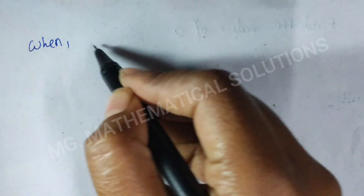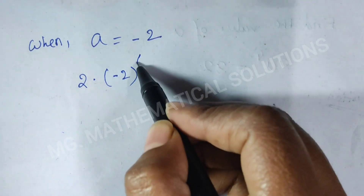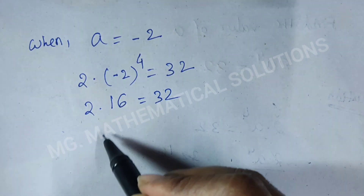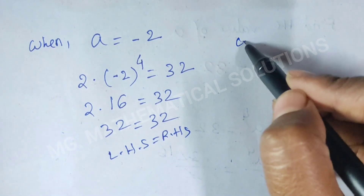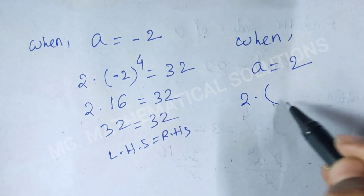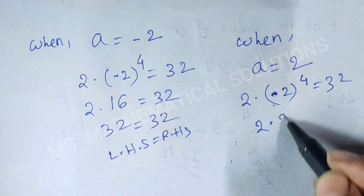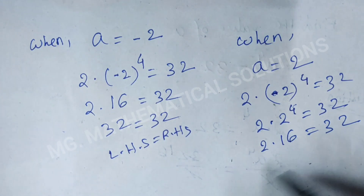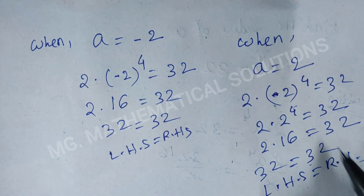When a equals minus 2, the equation becomes 2 times (minus 2) to the power 4 equals 32, so 2 times 16 equals 32, and 32 equals 32. Left hand side equals right hand side. When a equals plus 2, we get 2 times 2 to the power 4 equals 32, so 2 times 16 equals 32, and 32 equals 32. Left hand side equals right hand side.